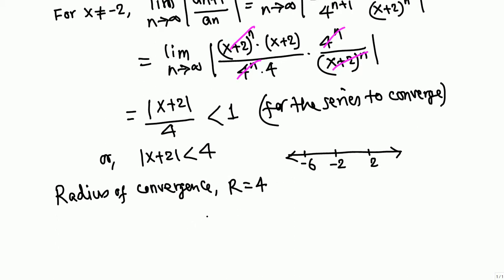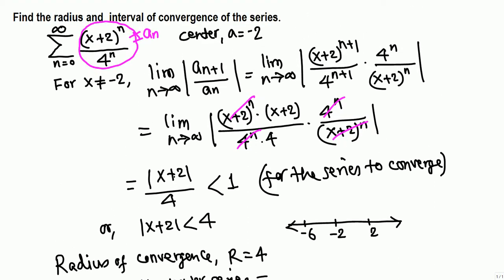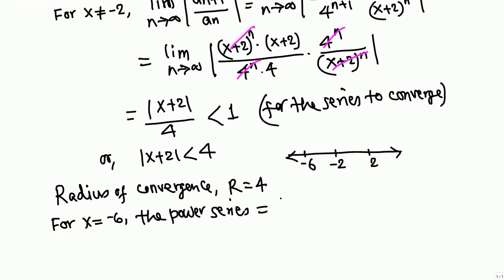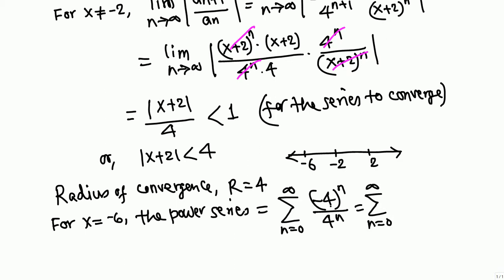For the interval of convergence we need to check the endpoints: what happens when x equals negative 6, and when x equals 2. For x equals negative 6, we go back to the power series and replace x with negative 6: we get (negative 6 + 2)^n over 4^n, which is (negative 4)^n over 4^n.